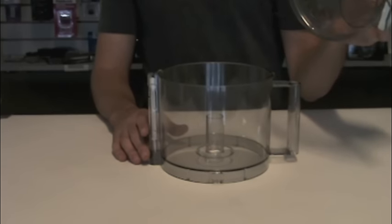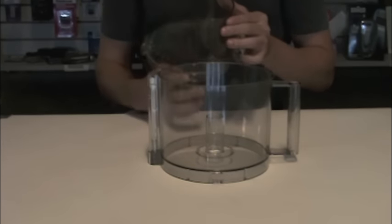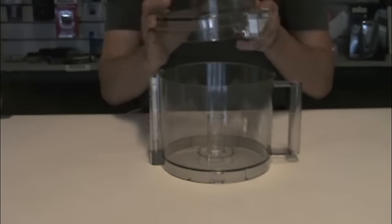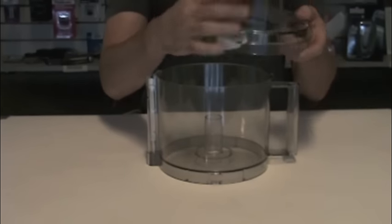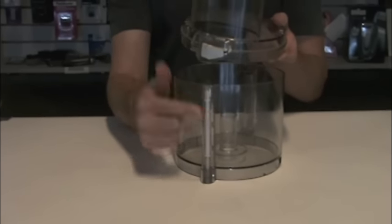You're going to get the lid which is the DLC-017BGTX with large feed tube. With the handle facing you, make sure that the white tab on the lid locks with the white shaft on the bowl.